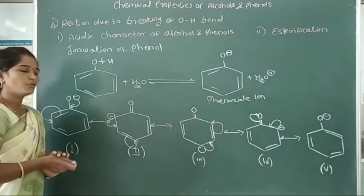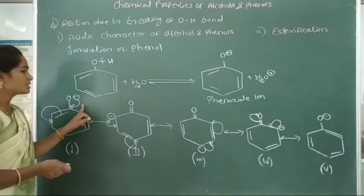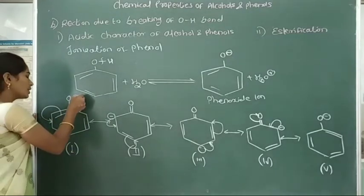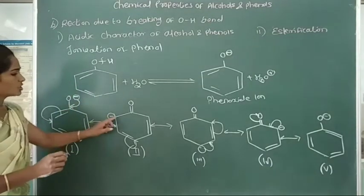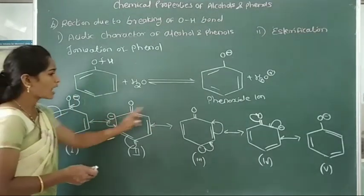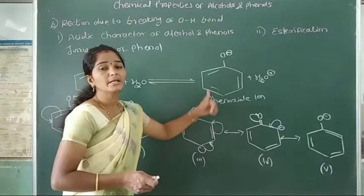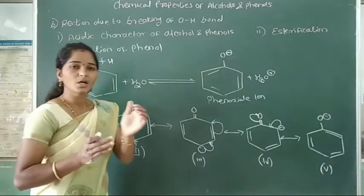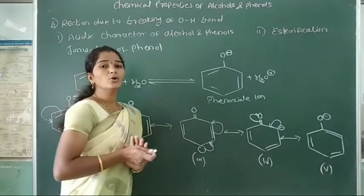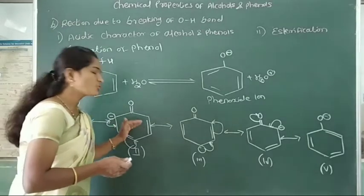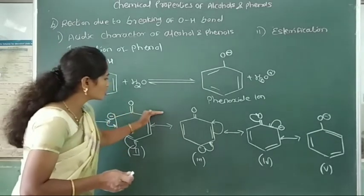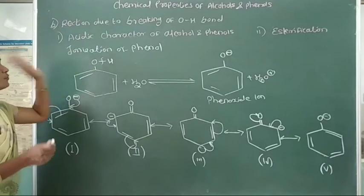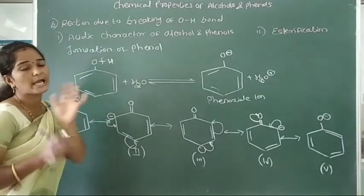In the resonating structures of phenoxide ion, it is resonance-stabilized by delocalization of this negative charge in the benzene ring. The negative charge on oxygen is delocalized to either the ortho position or para position. Therefore, due to this resonance stabilization of the phenoxide ion, phenol shows moderate or weak acidic character.